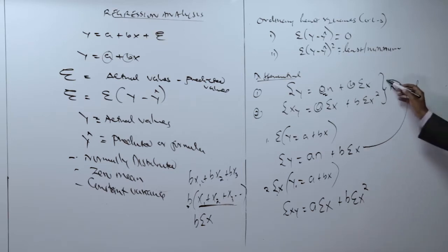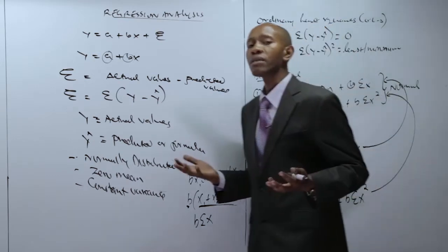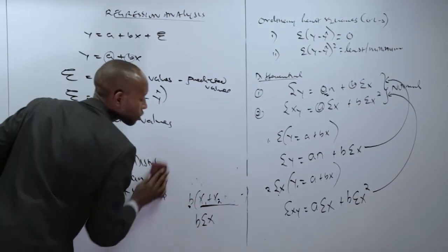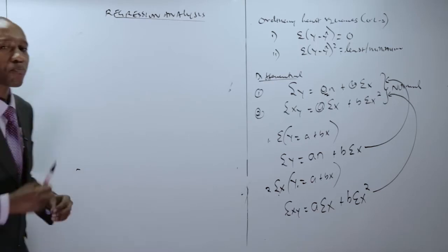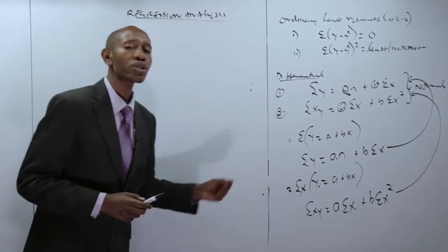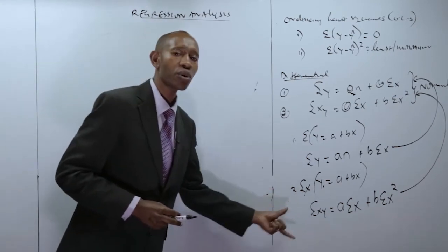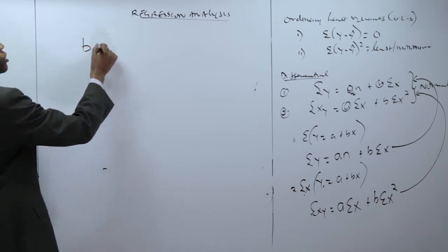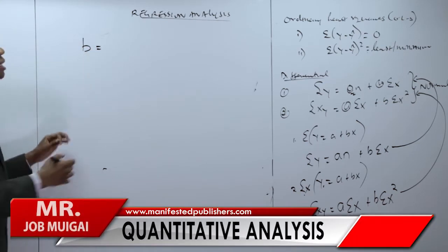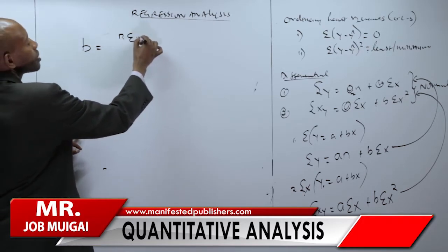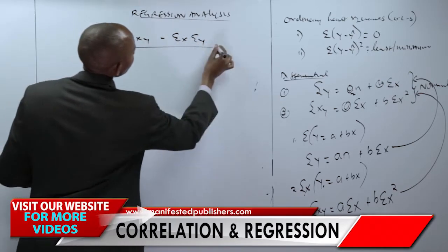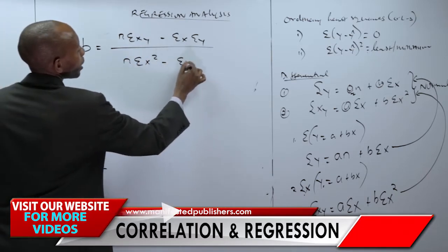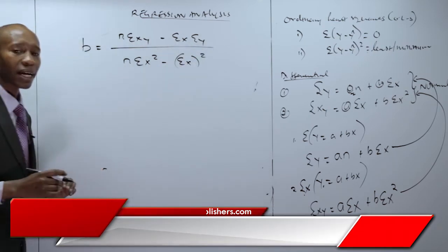On simplification, the values of b and a in the linear regression equation y equal to a plus bx can be determined using formulas. The value of b is equal to n times the summation of xy, minus the sum of x multiplied by the sum of y, all divided by n times the summation of x squared minus the sum of x, in brackets, squared. When we solve the two normal equations simultaneously, it is possible to determine the values of parameters a and b.